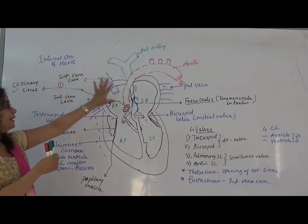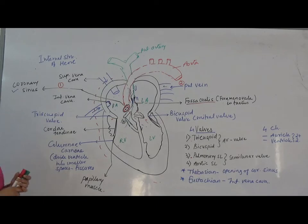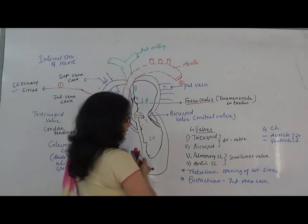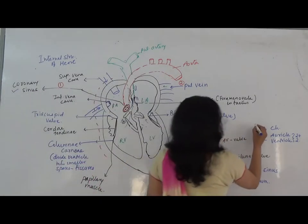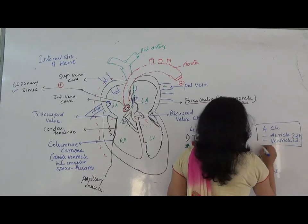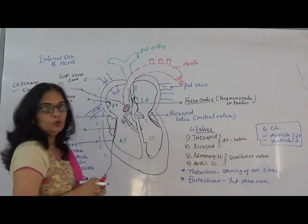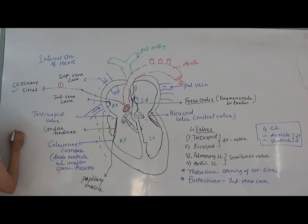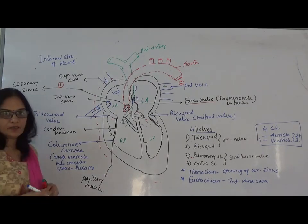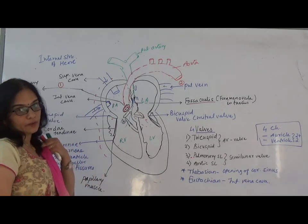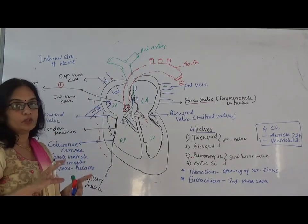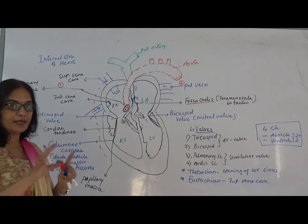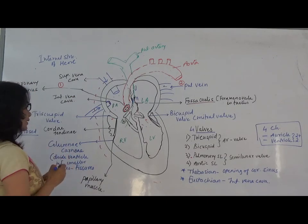Now we will see in detail the structure of the human heart. It is a four-chambered heart containing two auricles and two ventricles. The human circulatory system is called a closed circulatory system, meaning blood flows strictly through blood vessels.